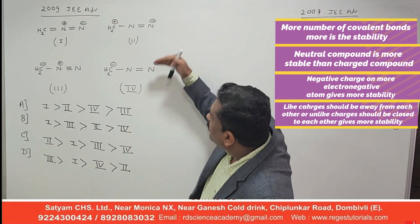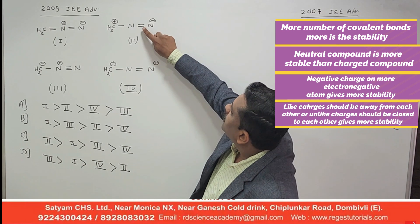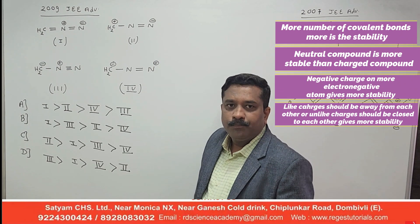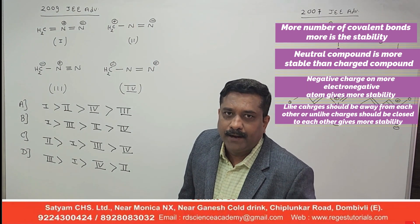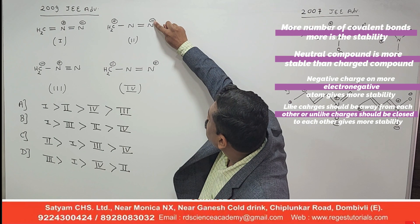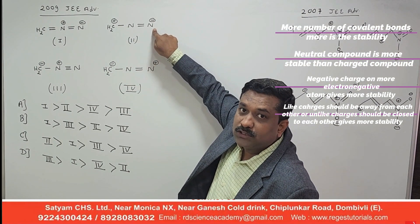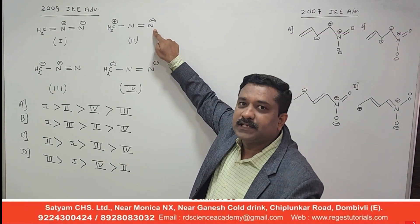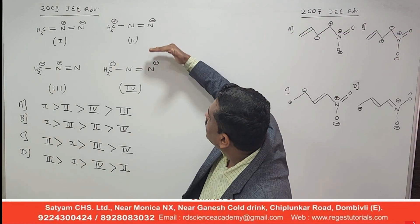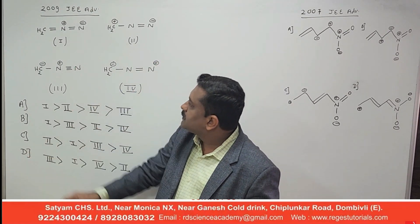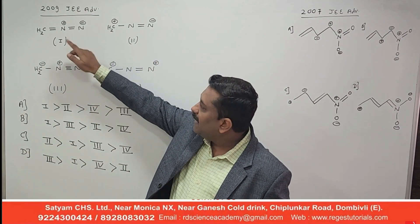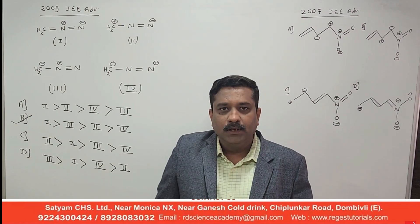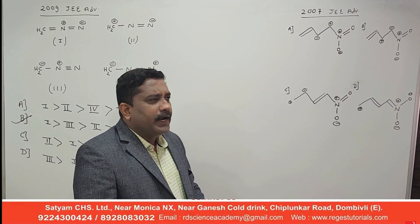For Structures 2 and 4: Rule 1 gives the same number of pi bonds; Rule 2 — both are charged; Rule 3 — in Structure 2 the negative charge is on nitrogen, in Structure 4 it is on carbon. Since nitrogen is more electronegative, Structure 2 is more stable than Structure 4. The final stability order is: 1 > 3 > 2 > 4. The correct answer is option B.